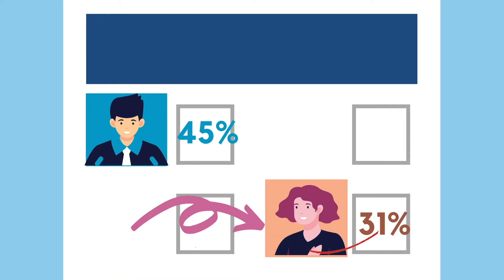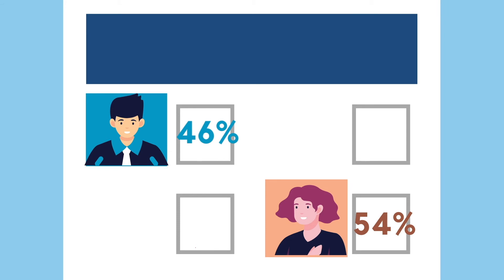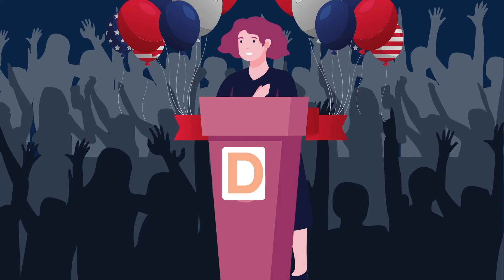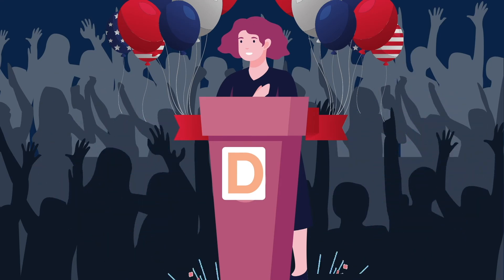Whoever out of the two remaining candidates has a majority wins. Denise pulls away with 54% of the vote at the end of the day, whereas Alex receives 46% of the vote. Congratulations to Denise — you win the election, you are now student body president.